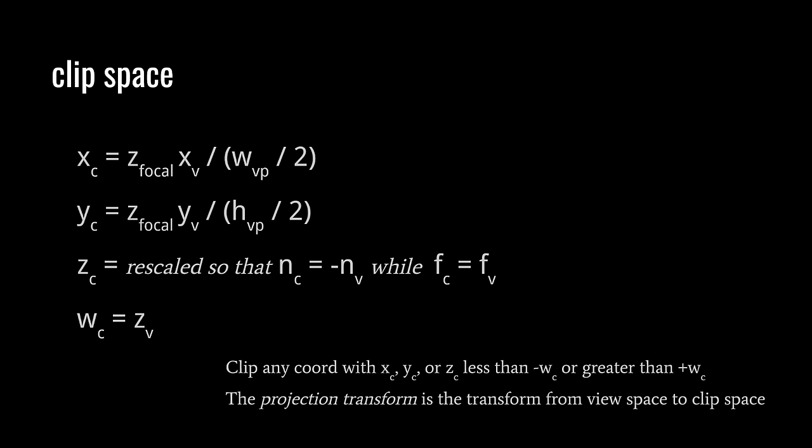Why are we scaling the x and y's by the focal length, and why are we dividing by the dimensions of the view plane? Notice that in clip space, we're in a sense partly accounting for perspective — we have multiplied by the focal length, but we haven't yet divided by the z's. That comes later. That's why we're saving the z value in w, so that when we go to normalized device coordinates, we can do the division — we can divide by w, which is effectively what the z value was.